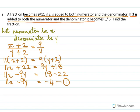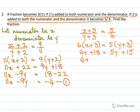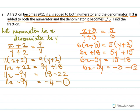In the second part, if 3 is added to both numerator and denominator, it becomes 5 by 6. So (x plus 3) over (y plus 3) equal to 5 over 6. Cross multiplying: 6(x plus 3) equal to 5(y plus 3). Opening the bracket: 6x plus 18 equal to 5y plus 15, giving 6x minus 5y equal to minus 3. This is equation 2.